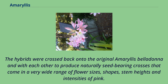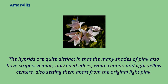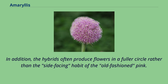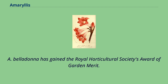The hybrids were crossed back onto the original Amaryllis belladonna and with each other to produce naturally seed-bearing crosses that come in a very wide range of flower sizes, shapes, stem heights, and intensities of pink. Pure white varieties with bright green stems were bred as well. The hybrids are quite distinct in that the many shades of pink also have stripes, veining, darkened edges, white centers, and light yellow centers, also setting them apart from the original light pink. In addition, the hybrids often produce flowers in a fuller circle rather than the side-facing habit of the old-fashioned pink. The hybrids are able to adapt to year-round watering and fertilization but can also tolerate completely dry summer conditions if need be. A. belladonna has gained the Royal Horticultural Society's Award of Garden Merit.